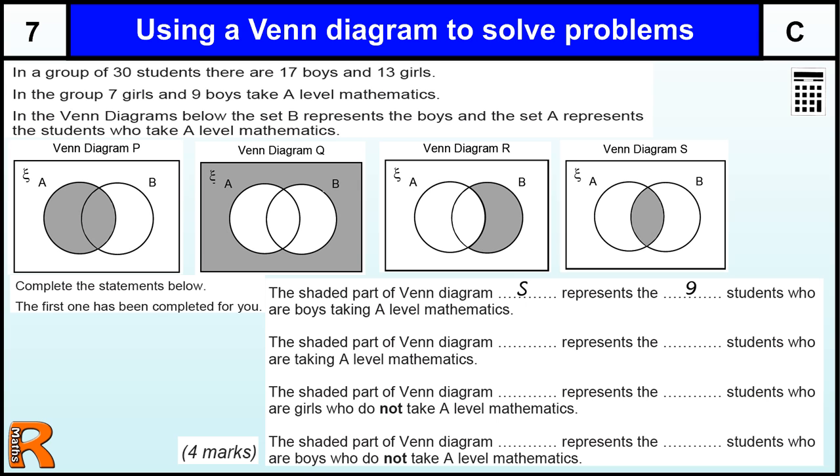Using a Venn Diagram to solve problems. Here we've got Venn Diagrams representing different things because they're shaded in. Set A is the students that take A level maths, set B are the boys, and we have to pick out the right diagram and the right number.